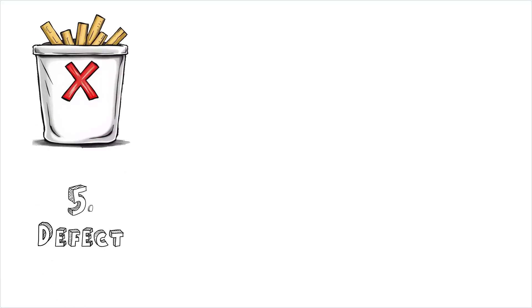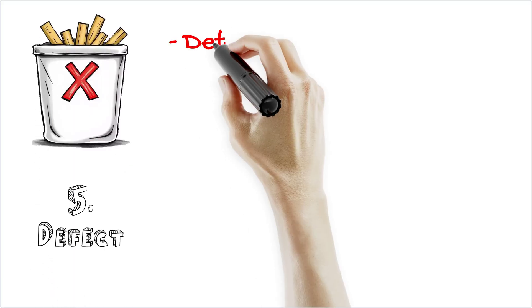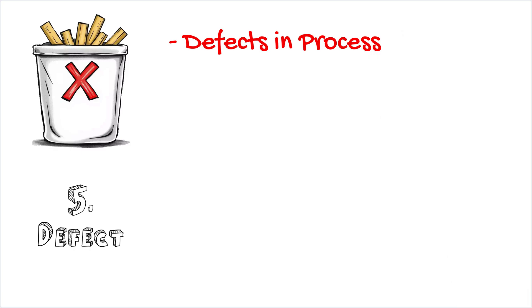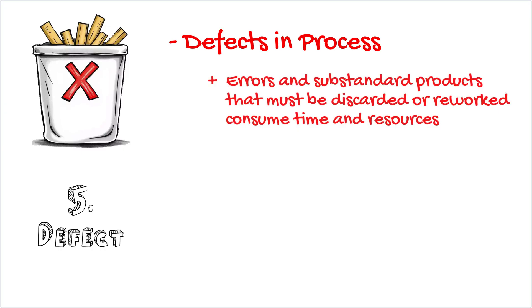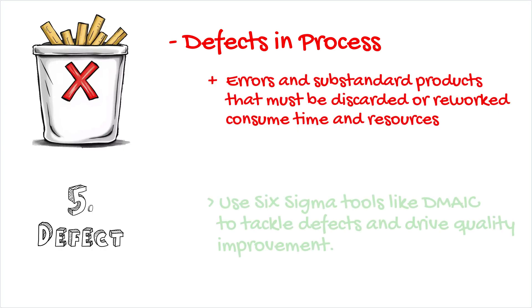Then we have defects in process, which need no introduction as they're a classic waste. Errors and substandard products that must be discarded or reworked consume time and resources. Six Sigma tools such as DMAIC — Define, Measure, Analyze, Improve, Control — help solve this by reducing defects.